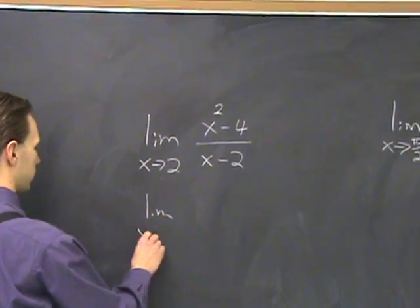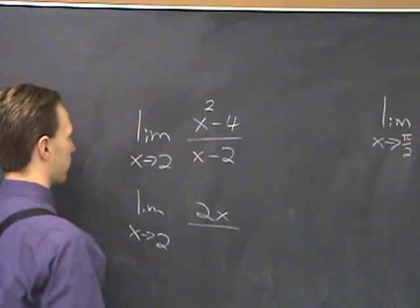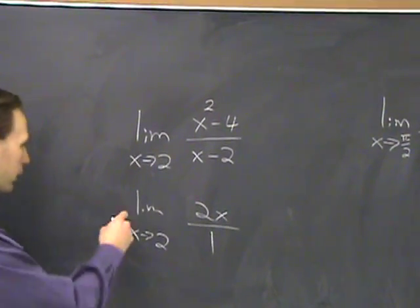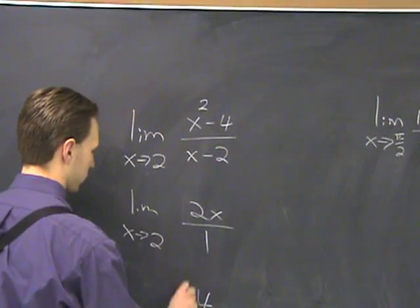Which means limit as x goes to 2, the derivative of the top, 2x, divided by the derivative of the bottom, which is 1. And then just plug that in. And what you get there is 4. That's the answer.